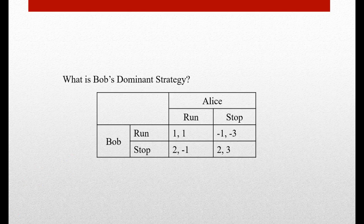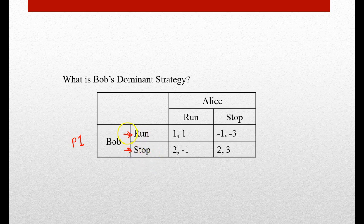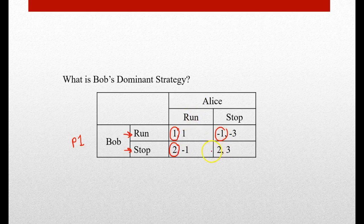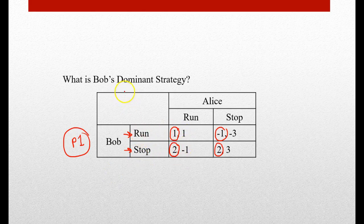So what we have here is two players: Bob and Alice. Bob is player one, and he has two strategies — he can either run or he can stop. Notice player one has the rows and player two will have the columns. Bob, if he chooses to run, his payoffs will either be one if Alice chooses to run, or negative one if Alice chooses to stop; and two if Alice chooses to run and two if Alice chooses to stop. The first number is always player one's payoffs.